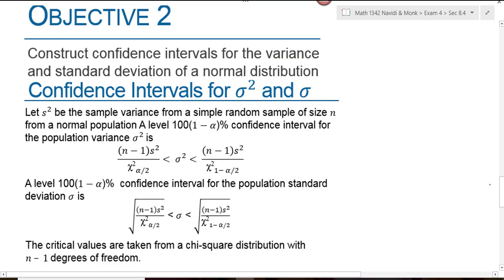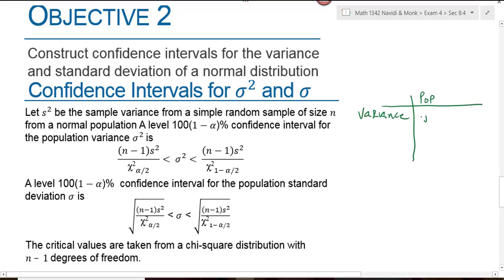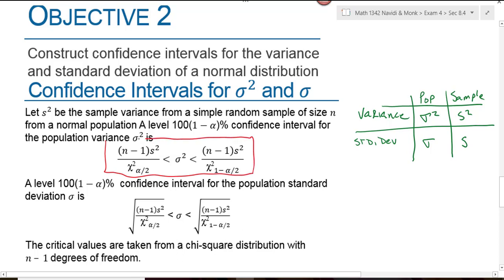Objective 2 is to construct confidence intervals for the variance and the standard deviation. As a quick reminder, variance has a population parameter of sigma-squared and a sample statistic of s-squared. The standard deviation has a population parameter of sigma and a sample statistic of s — the standard deviation is just the square root of the variance. The formula for a confidence interval on the variance uses (n-1)s² divided by chi-squared, and the standard deviation formula is just the square root of that. The critical value on the right is bigger, so dividing by a bigger number gives a smaller left bound.